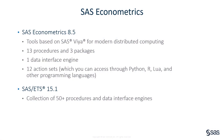SAS Econometrics and SAS ETS have been widely used in business, government, and academia. They consist of 51 procedures, 3 packages, 12 data engines, and 12 action sets. SAS Econometrics is in SAS Viya, which means it can take advantage of distributed computing. You can access all of its action sets through Python, R, LUA, and other programming languages. In this video, I introduce SAS Econometrics and SAS ETS in three categories: Econometric Modeling, Time Series Analysis, and Data Interface Engines.